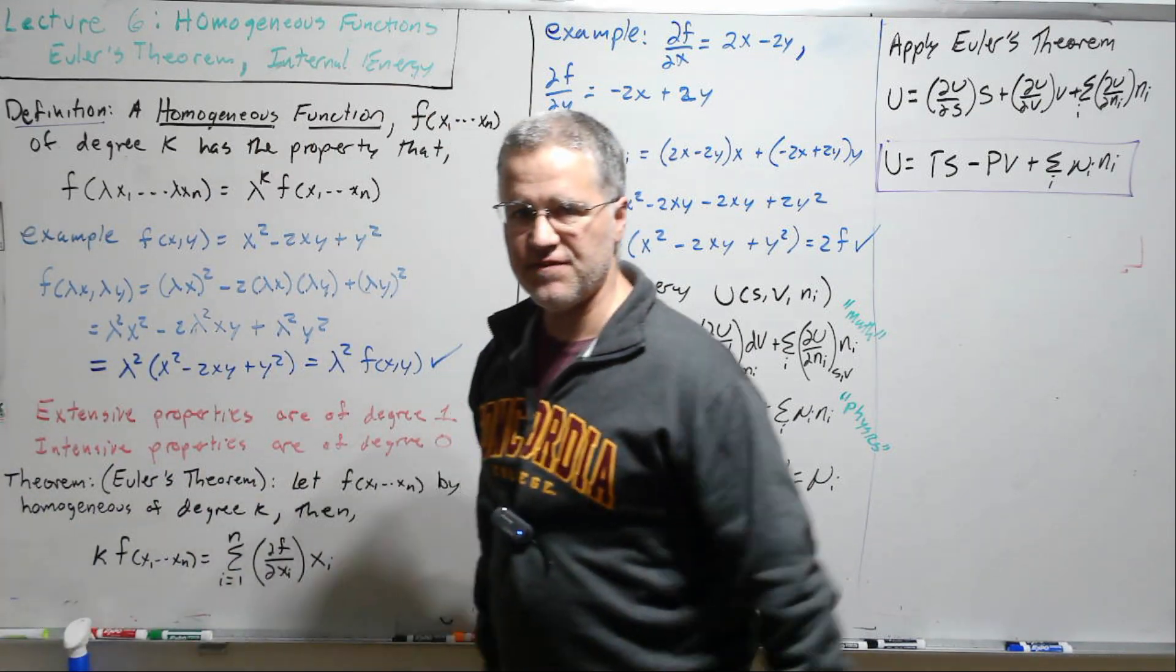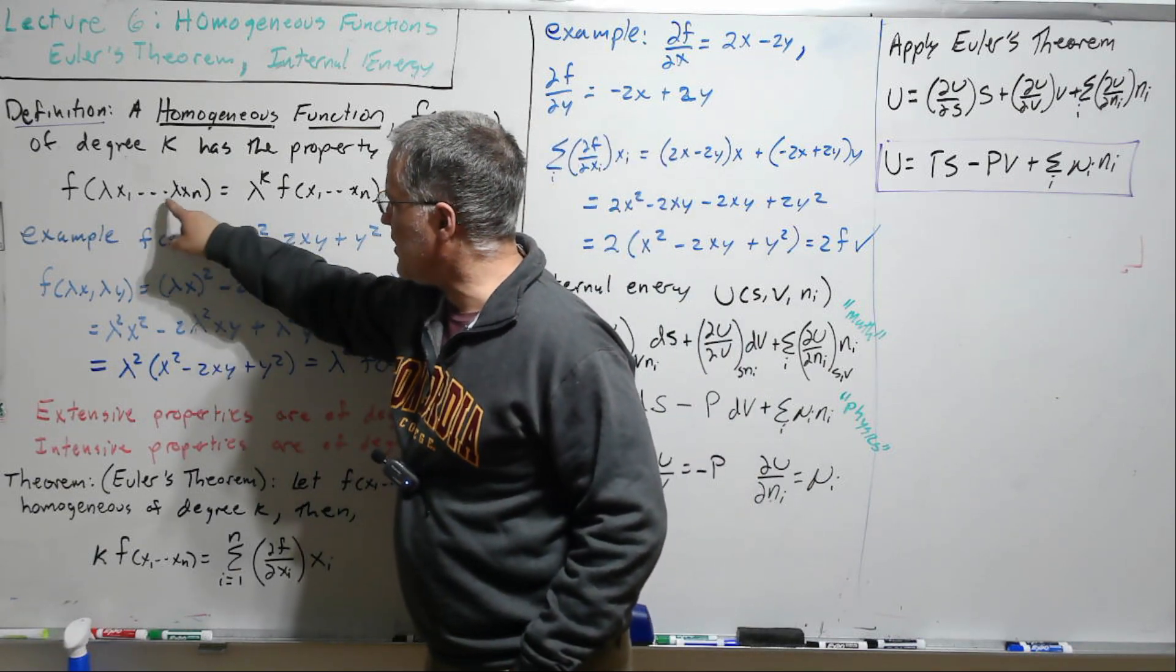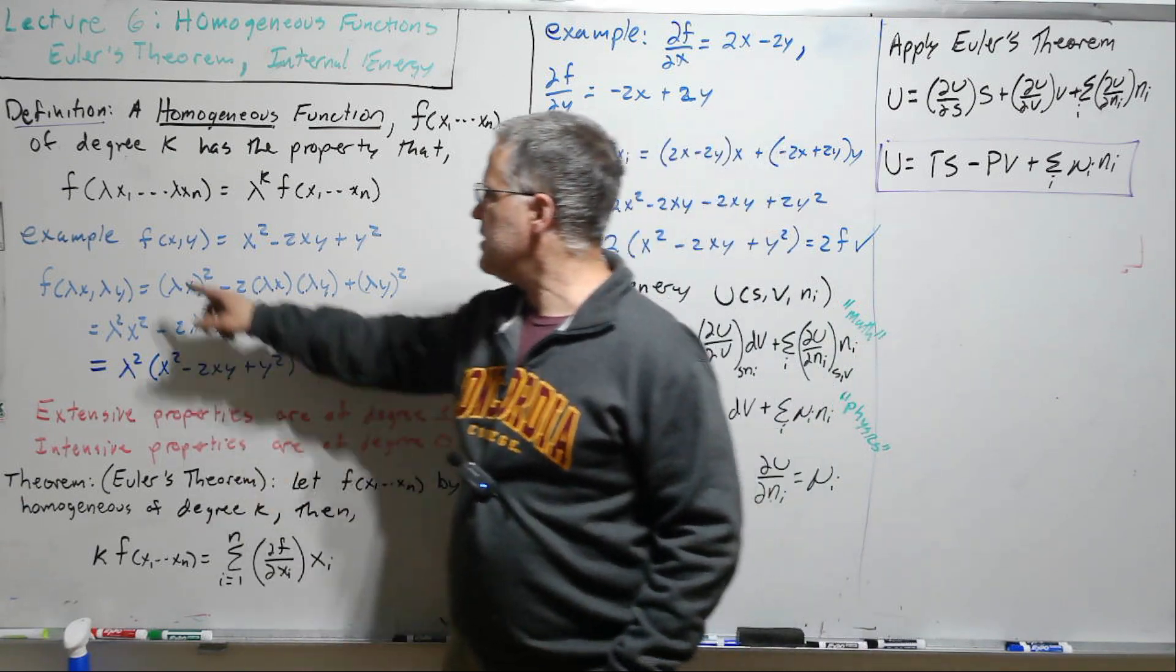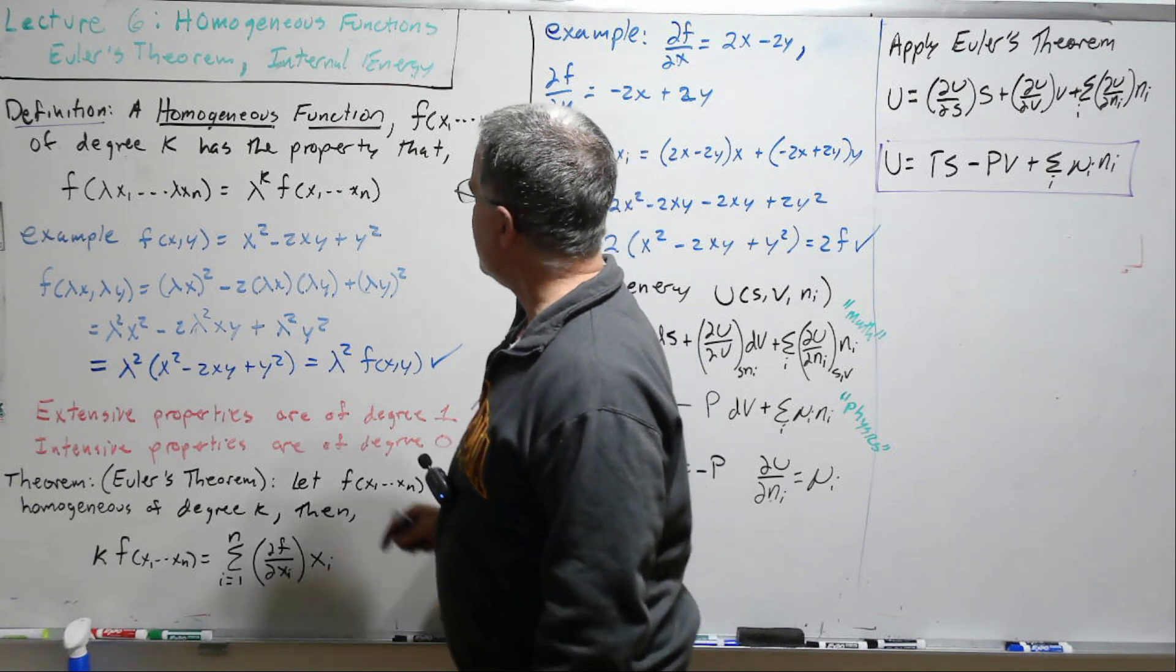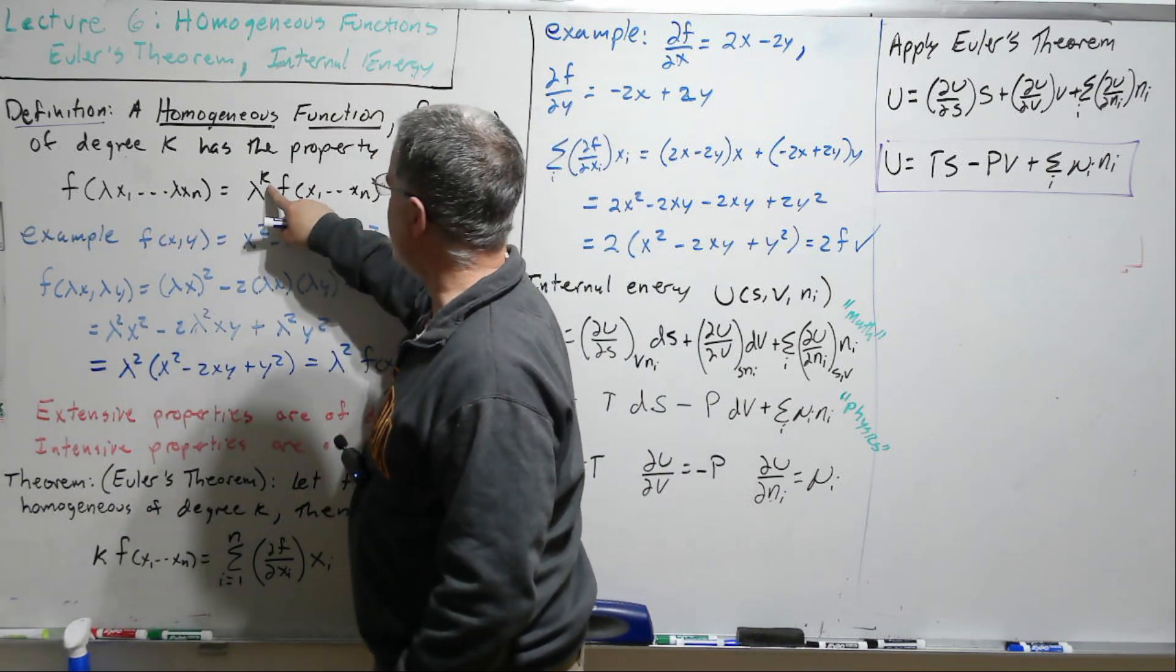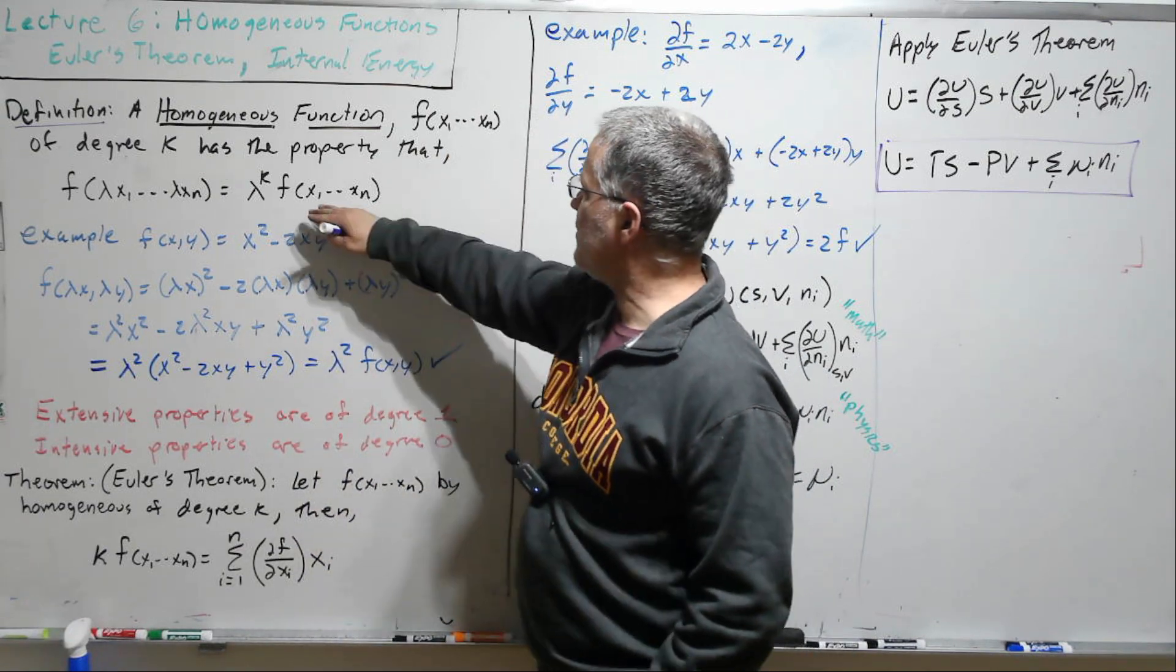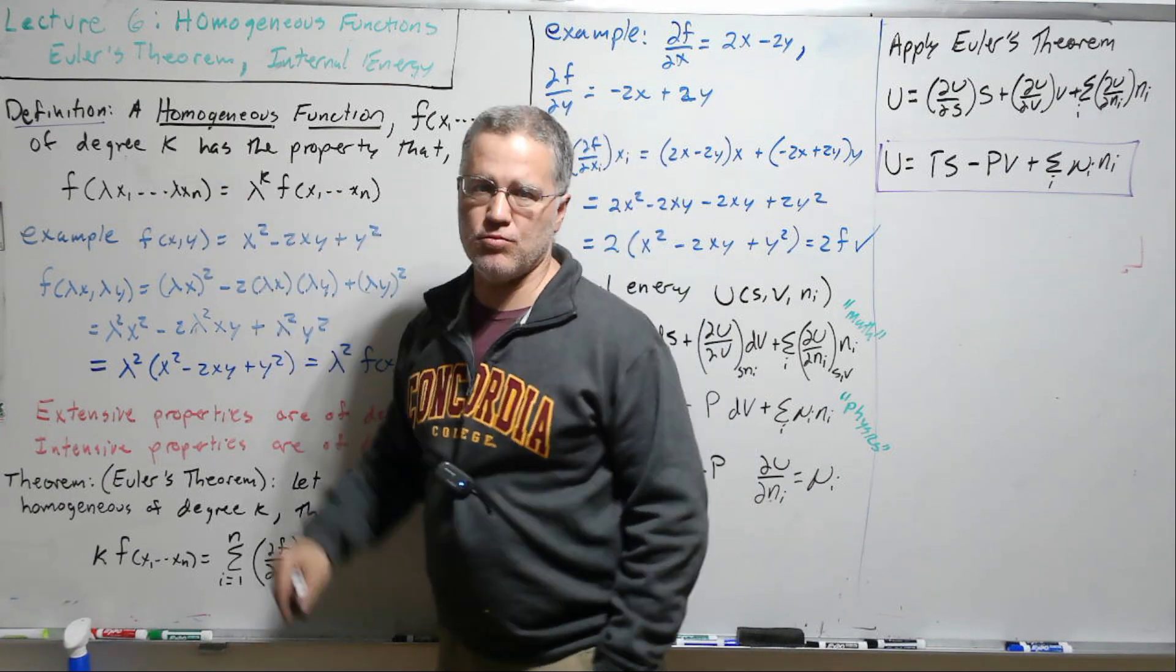A homogeneous function is one in which if you multiply the variables by some number, lambda, so lambda is some number, it's not some function, some number, then that function is lambda to the k f, the original function, and the k is the degree of the homogeneity.